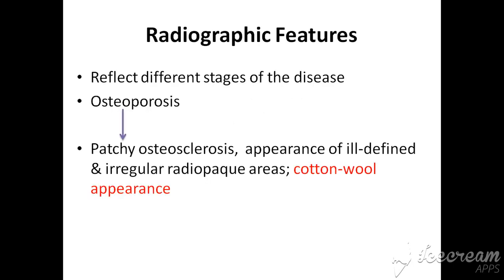Starting from the radiographic features, we first must know what Paget disease is and which organ it affects. This is the radiographic appearance of Paget disease, so definitely it involves bone. Paget disease is actually a disease that first causes osteoporosis and then causes osteosclerosis of the involved bone. On the basis of this, we can say there are basically two stages: osteoporosis and then osteosclerosis.